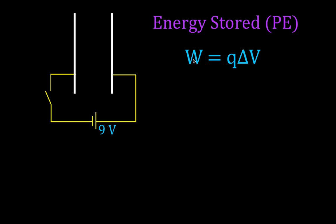This is the equation we used previously to calculate the amount of work it takes to move a charge through a certain potential difference. As mentioned earlier, when you do work, you store energy — in this case, electric potential energy. So in order to store that energy, the battery has to do work, and when the battery does work it's going to store electric potential energy through the movement of those electrons.